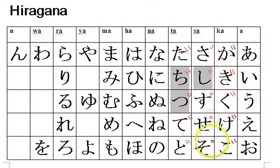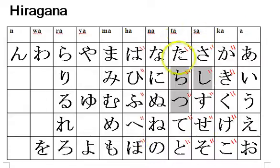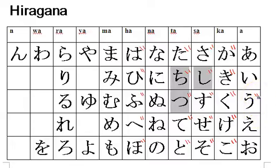In fact, there are only four columns of the hiragana chart where you can add ten ten accents. You can add ten ten accents to the hiragana in the ka column, sa column, ta column, and ha column. These are the only four columns. So for example, there's no such letter as u with ten ten — that doesn't exist. You cannot add ten ten to n — that doesn't exist. So there are twenty hiragana with ten ten accents.